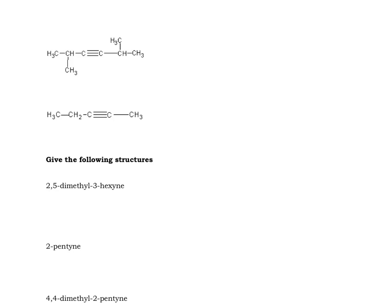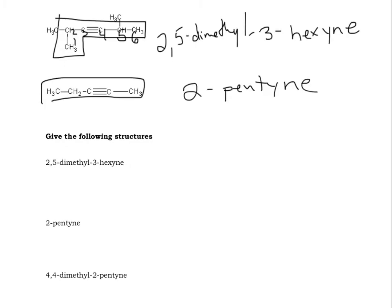There's a few more examples here, so try these, see how you do. So here we have 2,5-dimethyl-3-hexyne and 2-pentyne. Just be careful with 2-pentyne because sometimes this will be misnamed 3-pentyne, but remember you can number from either the left side or the right side, it doesn't really matter.